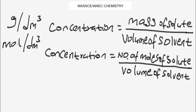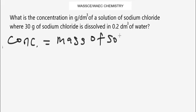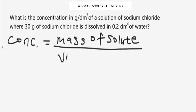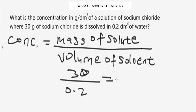Question: What is the concentration in g/dm³ of a solution where 30 g of sodium chloride is dissolved in 0.2 dm³ of water? Applying the formula: Concentration = 30 ÷ 0.2 = 150 g/dm³. So the answer is 150 g/dm³.